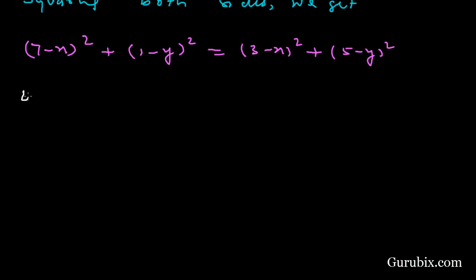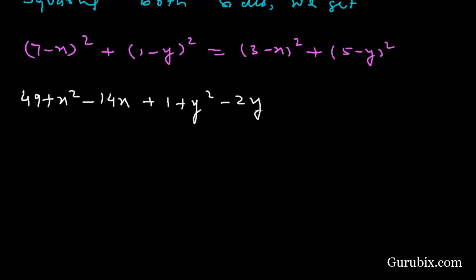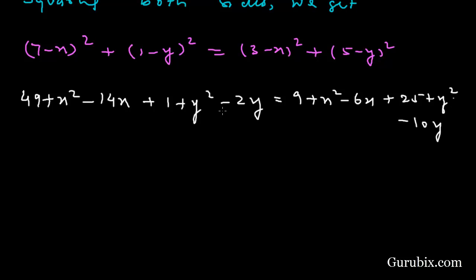Expanding, we get 49 + x² - 14x plus 1 + y² - 2y equals 9 + x² - 6x plus 25 + y² - 10y. We can cancel the y² terms on both sides and the x² terms on both sides.